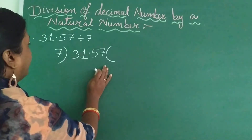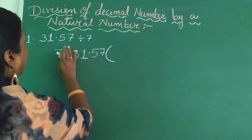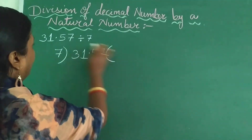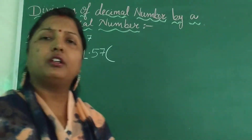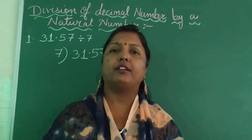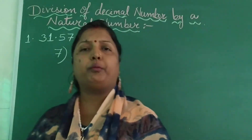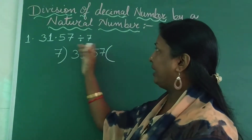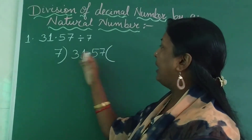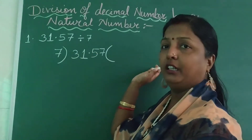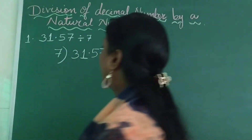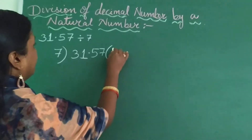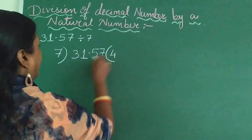Now, you can write the question here or on the top — it does not matter. You can write the question anywhere. I am going to write it on the right hand side. So, 7 goes into 4, 0.